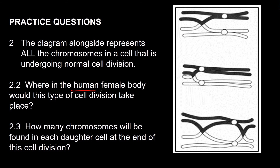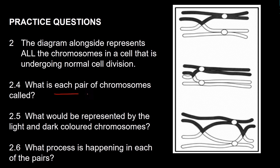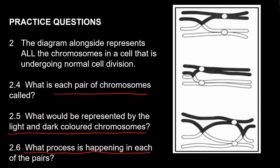Where in the female human body would this occur? That would obviously be in the ovaries. How many chromosomes will be found in each daughter cell at the end of the cell division? If there are six chromosomes in the cell to start, how many would end up in the gamete formed? It would be three. What do we call each pair of chromosomes? That's homologous chromosomes. Why are they light and dark colors? That is to show that one member of each pair comes from the father and one from your mother — so it would be maternal and paternal. What process is happening? Here you would have to describe the process of crossing over.